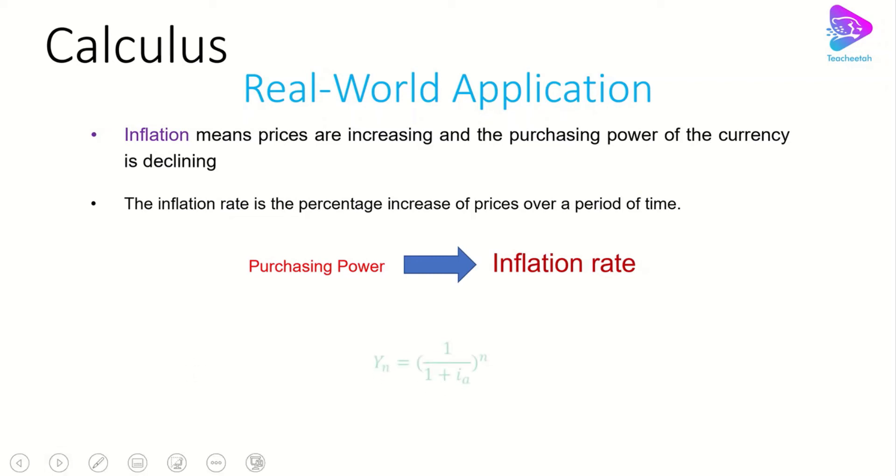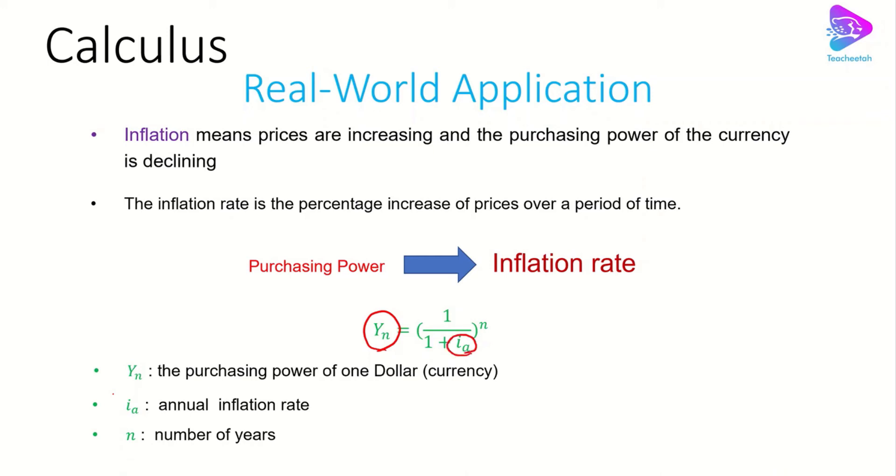And there is a function for it which says that yn is equal to 1 over 1 plus ia to the power of n. And in here yn is actually the purchasing power of 1 dollar or the currency. Ia is the annual inflation rate and n is the number of years.